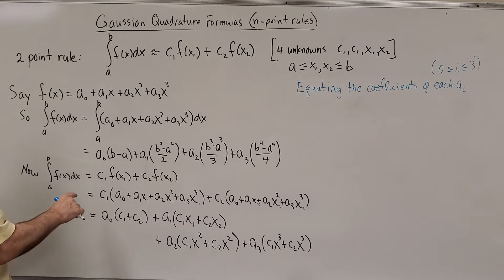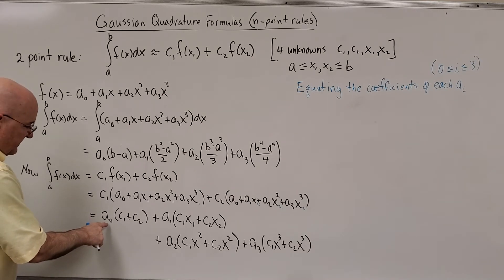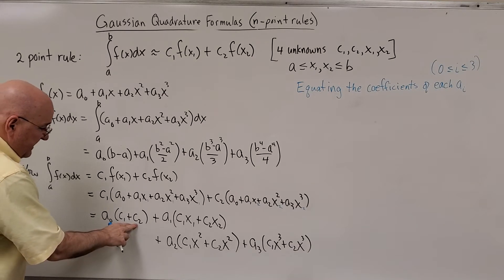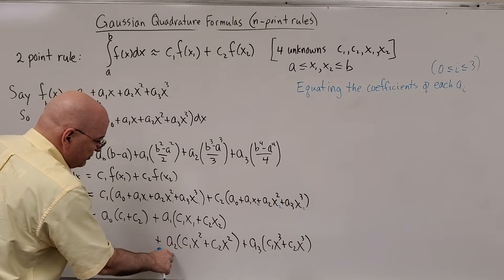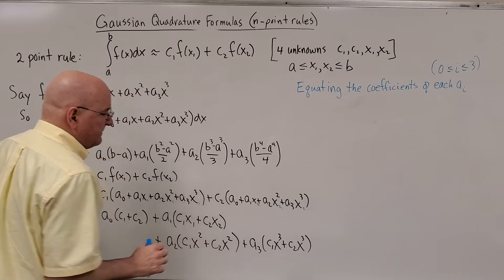And that gives us, I did the algebra really quickly, and I isolated, I got A0 times a coefficient, plus A1 times a coefficient, plus A2 times a coefficient, plus A3 times a coefficient.